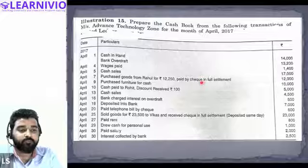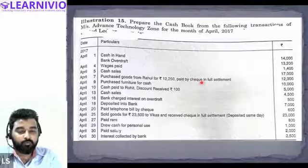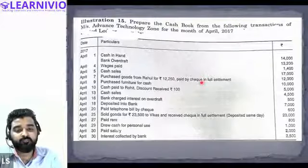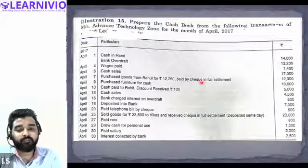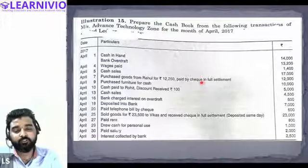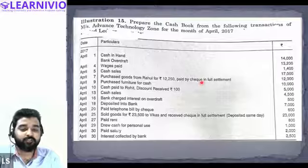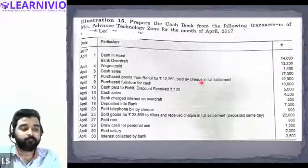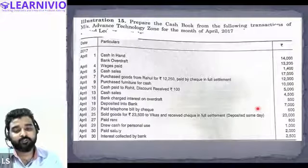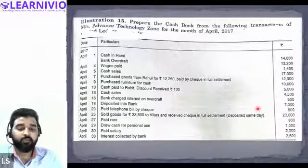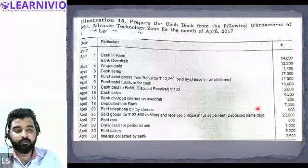Deposited 7,000 into bank — this is a contra entry. When we deposit cash into the bank, cash reduces and bank increases simultaneously. So on the debit side, we record 'To Cash Account' in the bank column for 7,000, and on the credit side we record 'By Bank Account' in the cash column for 7,000.